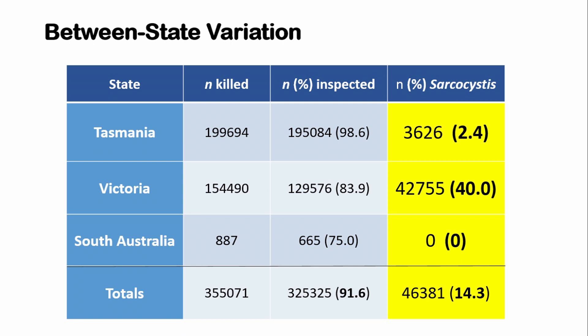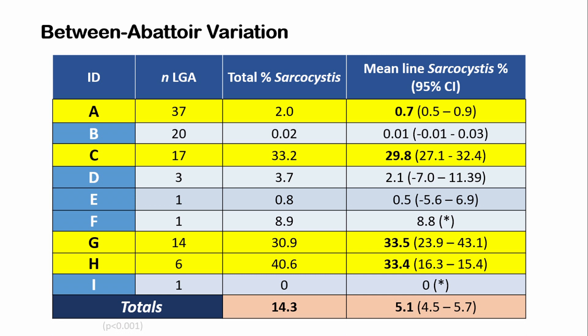As well as differences over the years, we also want to look at differences when Tasmanian sheep were slaughtered in different states. Sometimes sheep stayed within Tasmania; other times they were transported to the mainland. The vast majority were slaughtered and inspected in Tasmania or Victoria, with just 887 in South Australia. Breaking it down by state, there are relatively huge state differences in the data — without needing any fancy statistical modelling — with 9 abattoirs in total contributing.